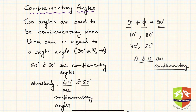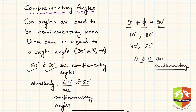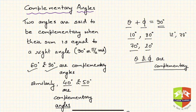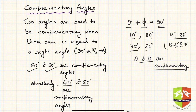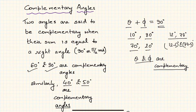For example, 60 and 30 degrees sum to 90, so they are complementary to each other. Similarly, 40 and 50 degrees are complementary, as are 10 and 80, 70 and 20 — all these pairs are complementary angles. Also, 12 degrees and 78 degrees are complementary, and 12.5 degrees and 77.5 degrees are also complementary. You can find infinitely many such pairs.